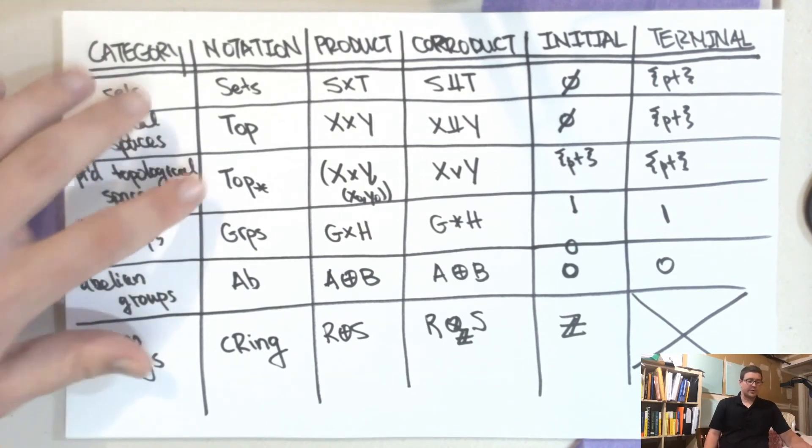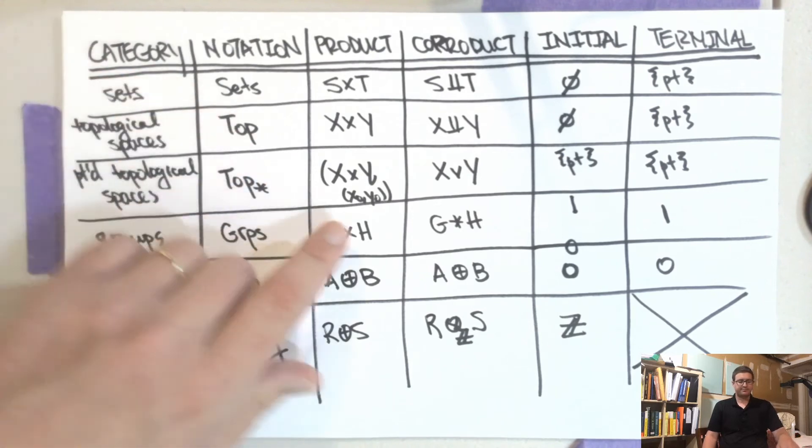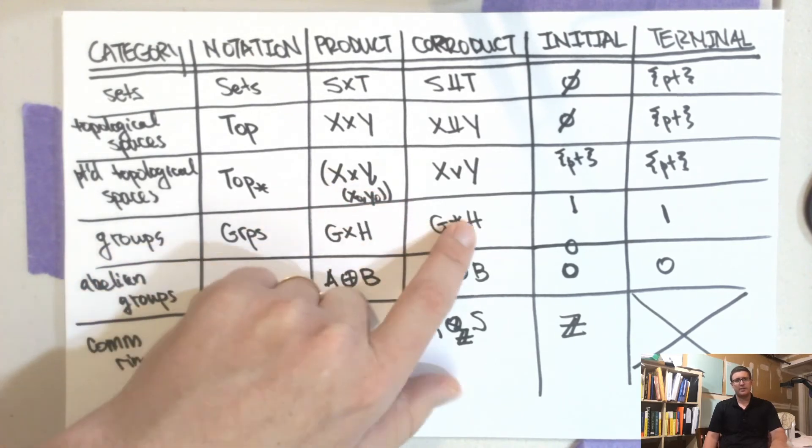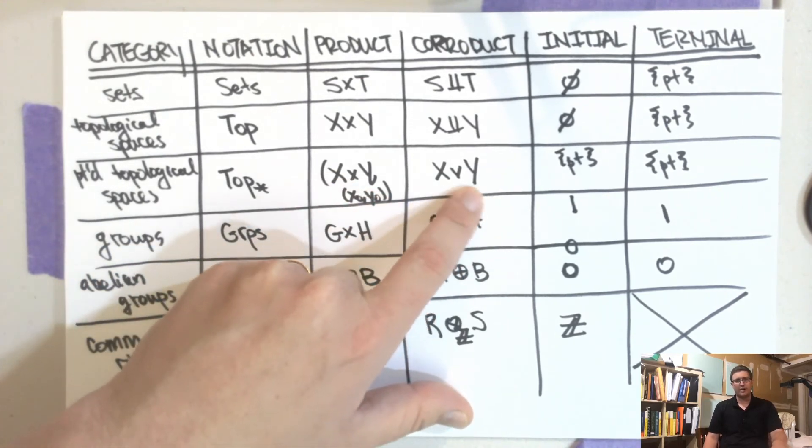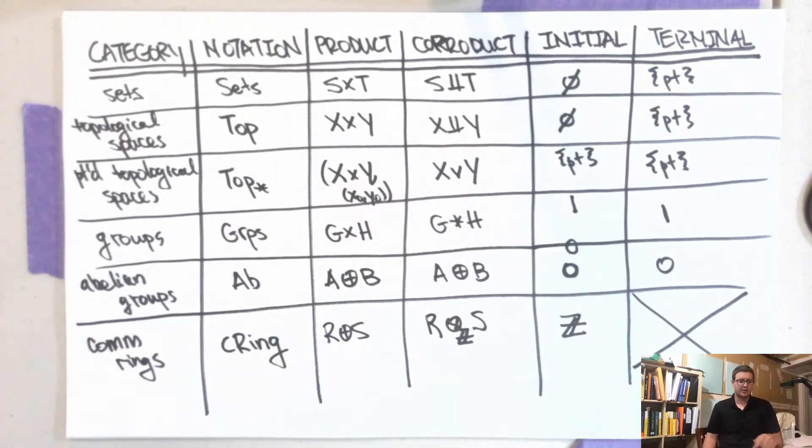So also we can look at these things for pointed topological spaces. Now they're not the same, so the product of pointed topological spaces, you take the marked point to be the pair of marked points here. There's this thing called the wedge product, where you glue the two points, and then the initial and terminal objects are both points.